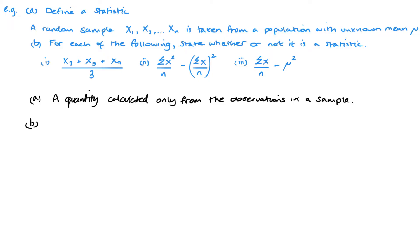When we look at the third one, we have a problem. The mean in it is unknown — it tells us in the question that it involves an unknown mean. If we don't know it, it cannot be a statistic, because that was one of the definitions: a statistic must not involve any unknown parameters.